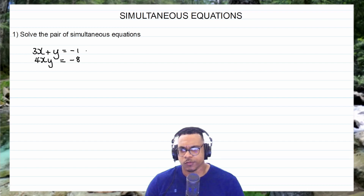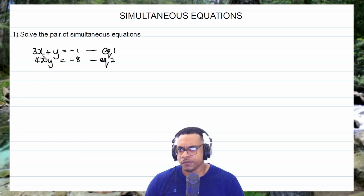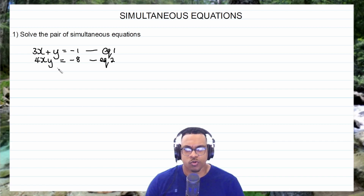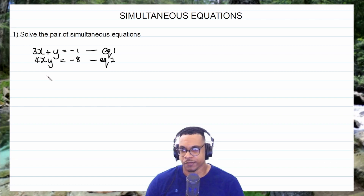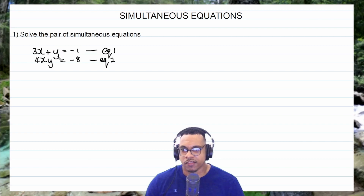First I'll label my equations equation 1 and equation 2. Equation 1, 3x plus y equals negative 1, is a linear equation. Terms are separated by plus or minus signs, so 3x is one term and y is another. The highest power on 3x is 1 (x to the power of 1), and the same for y. Since the highest power is 1, this is a linear equation.